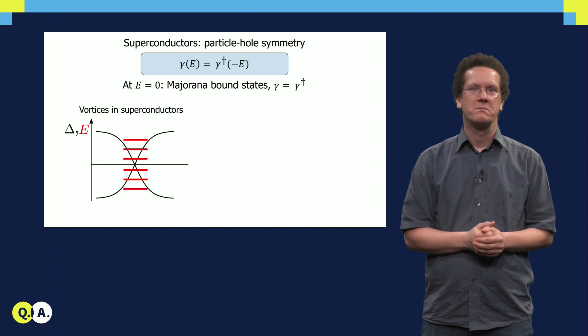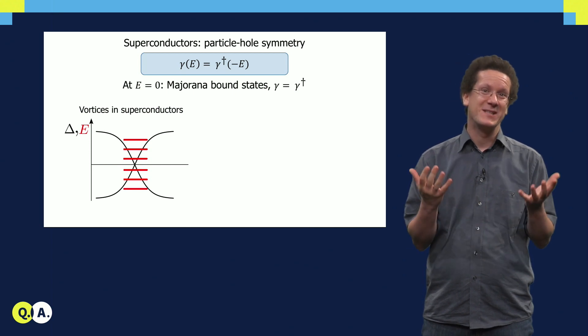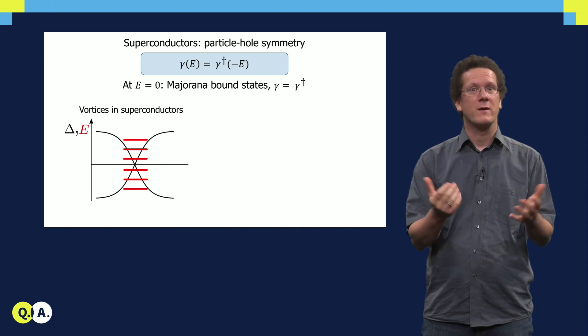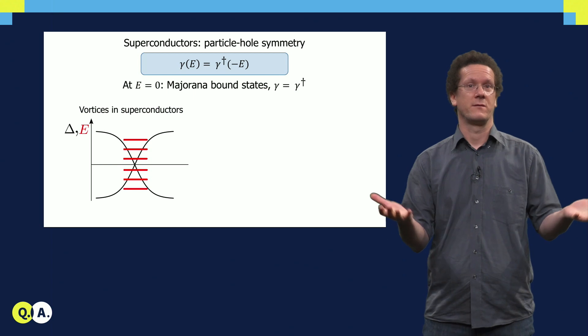At this point, it might seem easy to find Majoranas. We just have to find states in superconductors with zero energy. But this is actually not as easy as it seems. Because how could one get states at small energies in a superconductor? After all, there is the superconducting gap.